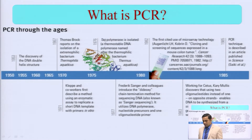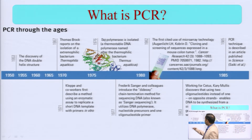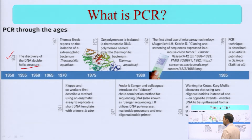Now let me tell you a basic history. All of you are aware that in 1953, the discovery of the DNA double helix structure was done by Watson and Crick.